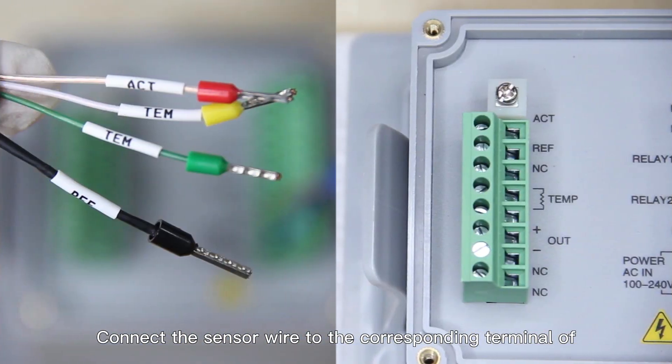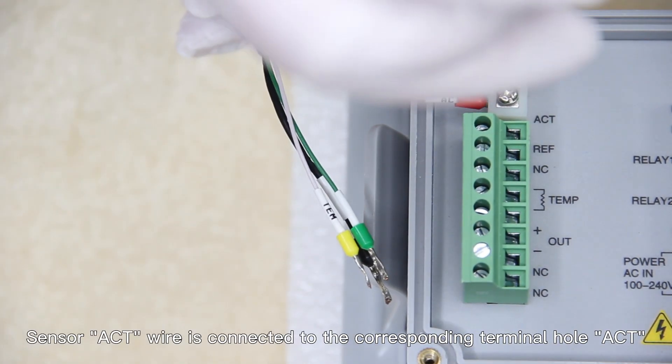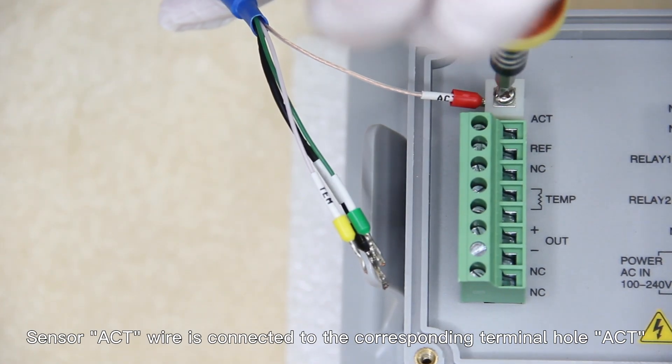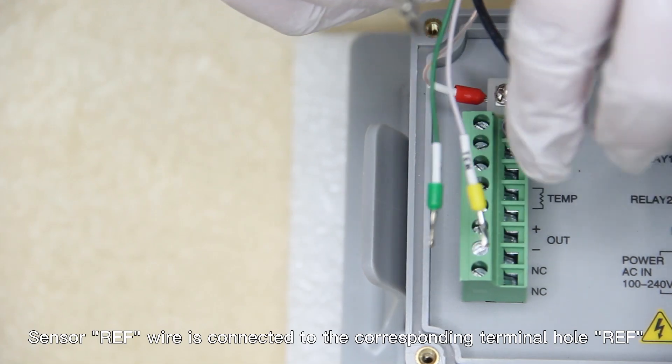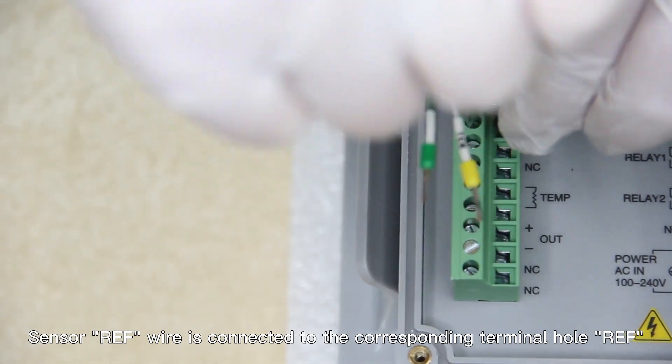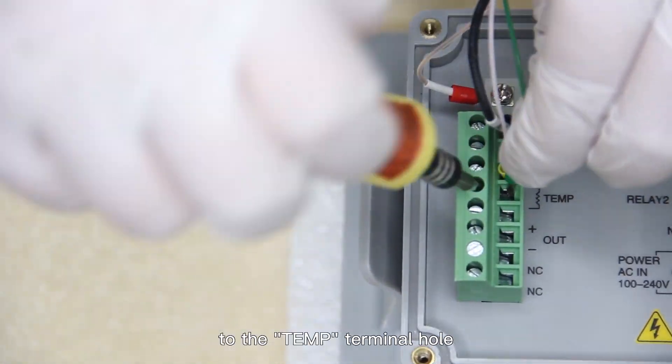Connect the sensor wire to the corresponding terminal of the meter according to the wire mark. Sensor ACT wire is connected to the corresponding terminal hole ACT. Sensor REF wire is connected to the corresponding terminal hole REF. The two temperature wires of the sensor are connected to the temp terminal hole.